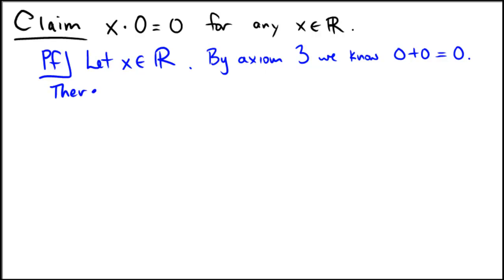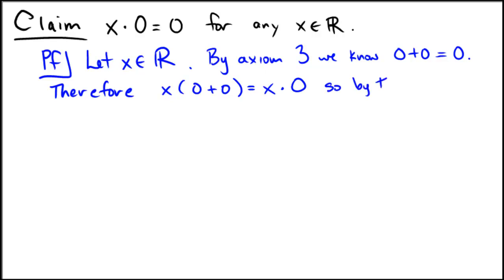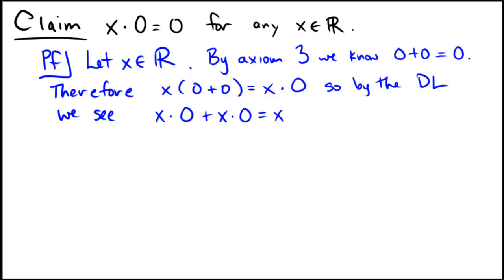Therefore, what can we conclude from that? Let's multiply both sides by x. So x times (0 plus 0) equals x times 0. Then by the distributive property, we see that x times 0 plus x times 0 equals x times 0.